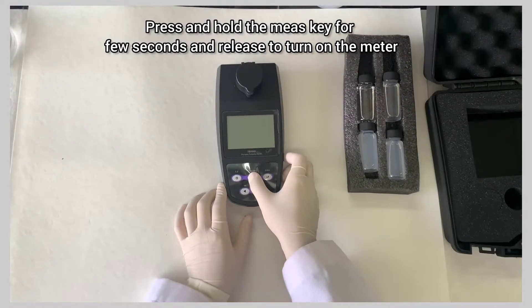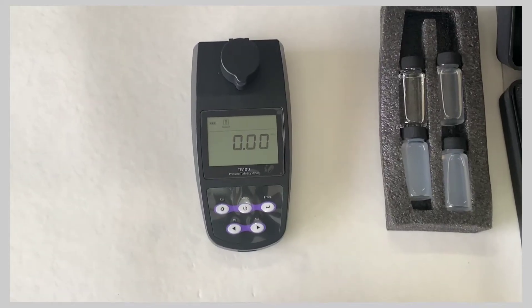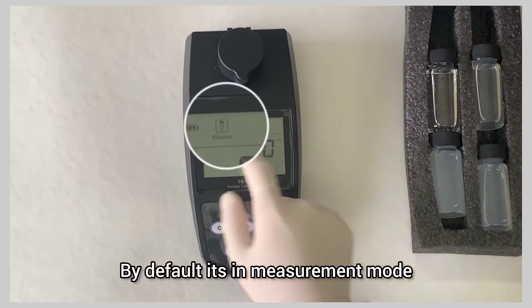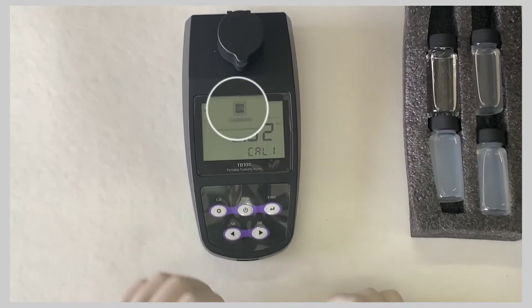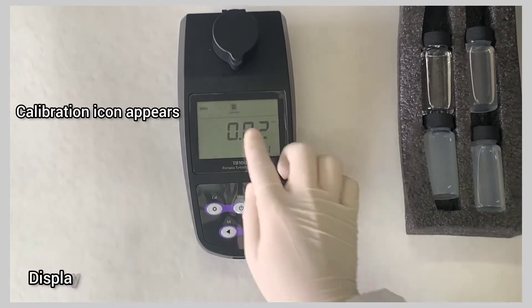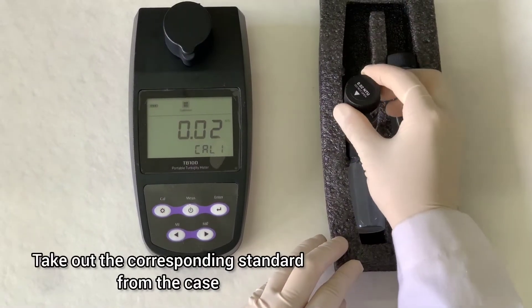Press and hold the MES key for a few seconds and release to turn on the meter. By default it is in measurement mode. Press CAL key to calibrate the meter. The calibration icon appears and the display shows 0.02 NTU.